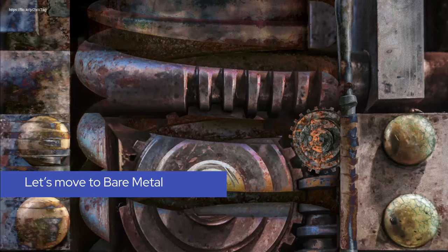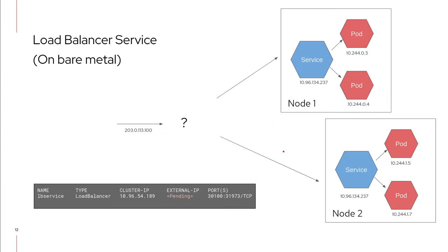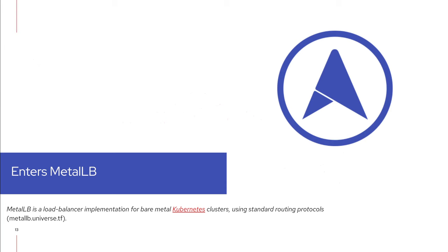On bare metal, we don't have anyone giving us an external IP, so the first problem is that our external IP stays in pending. Even if we had an IP, the other missing part is the network infrastructure that redirects traffic towards the virtual IP to the nodes so that the CNI can do its part. These two problems — assigning the IP and routing traffic to the given nodes — are what MetalLB tries to address. MetalLB is a load balancer implementation for bare metal Kubernetes clusters using standard routing protocols.